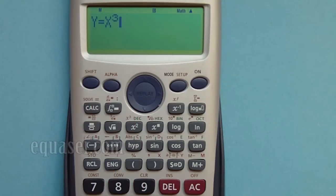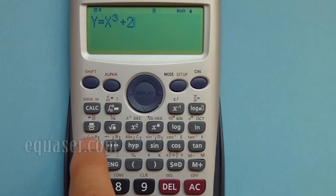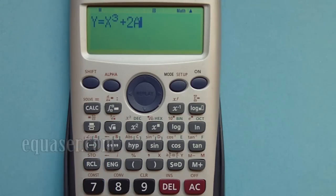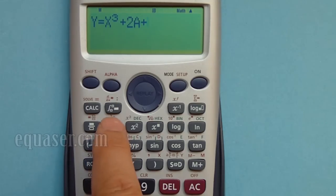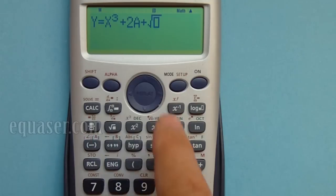X cubed plus 2 - I press alpha A - plus 2A plus square root of... square root of B plus 6.